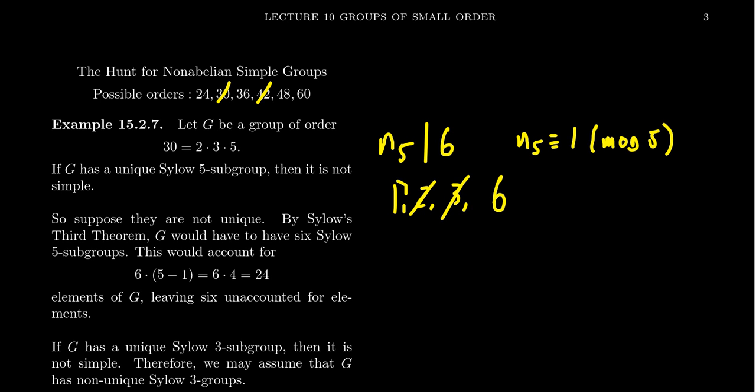Now, if there was a unique Sylow 5-subgroup, it would be normal and therefore that group would not be simple. So we don't have to worry about that case. So we're then going to consider what if we have six Sylow 5-subgroups? They're not unique.